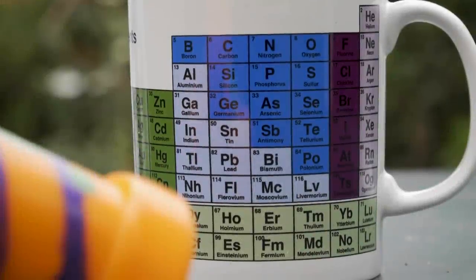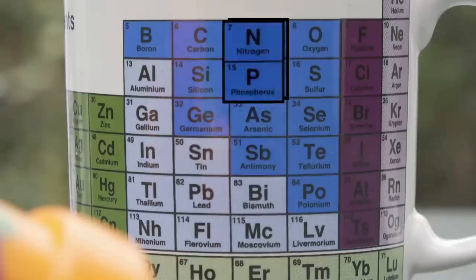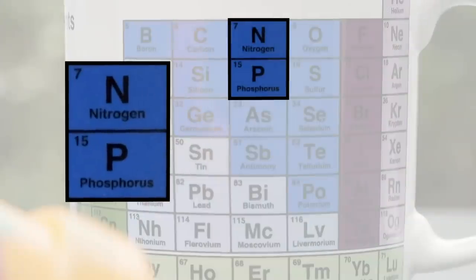Phosphine, molecule PH3, is, as Brady likes to say, the older brother of ammonia, NH3, because phosphorus is underneath nitrogen on the periodic table.